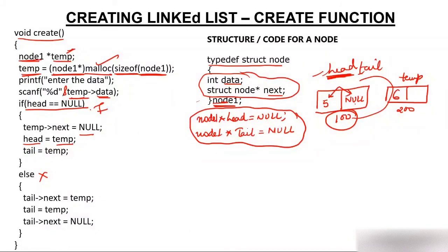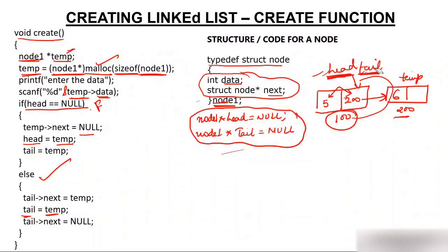In the else part: tail->next = temp, so instead of null, the next part of the first node now has 200 — linking the first node to this new node. Then tail = temp, so tail moves from address 100 to address 200. Temp is 200, so tail now has 200. Finally, tail->next = null since there is no further node. The moment we come out, temp dies again as a local variable.